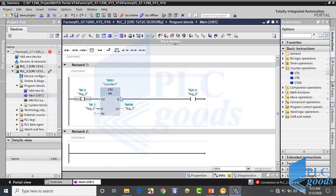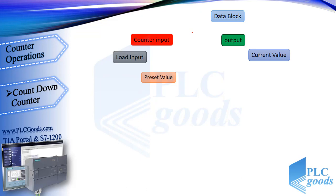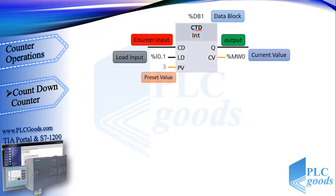We have been in online mode but I've closed my PLC. TIA software detected this and shows an icon. Let me click on it to go offline. We have seen the count up counter — its syntax is CTU. The next counter is countdown, which can be detected with the syntax CTD. This counter is similar to the previous one but has a slight difference at its inputs and works in reverse — it counts from the preset value down to 0.